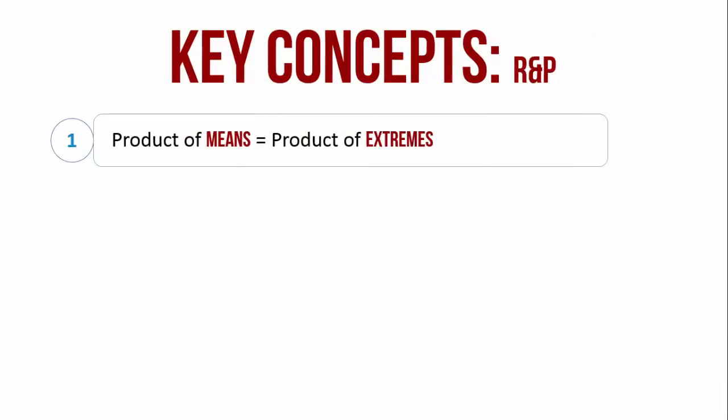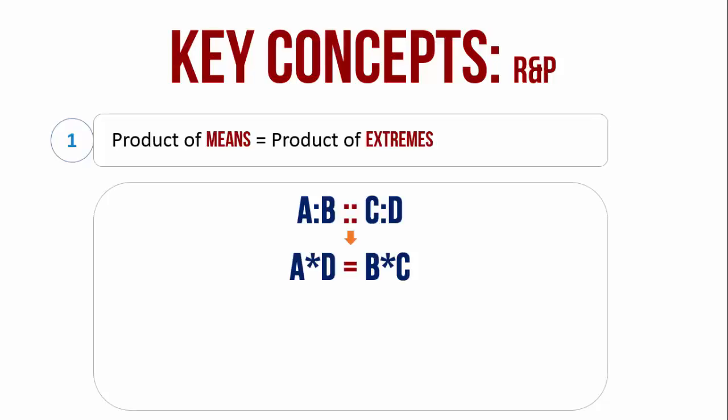Let us now look at some key concepts. The product of means is equal to the product of extremes. If a is to b is as c is to d, then a into d is equal to b into c. This is also called the cross product.